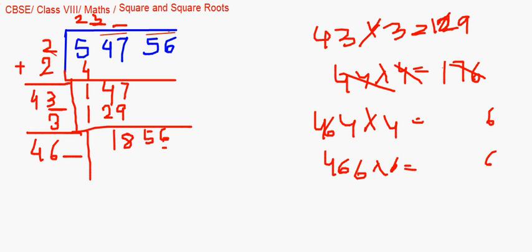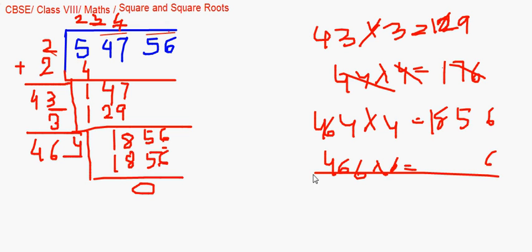So if I see 464 times 4, that's directly giving me 1856. So 464 multiplied by 4 would give us 1856, and then the remainder becomes 0.